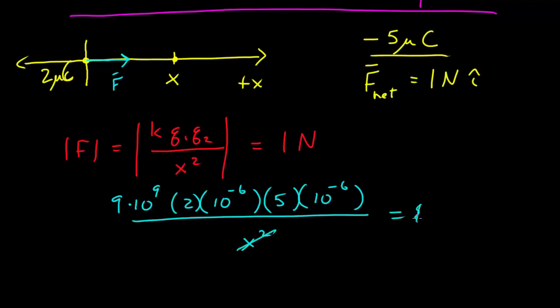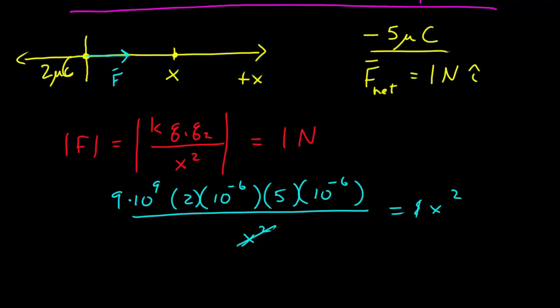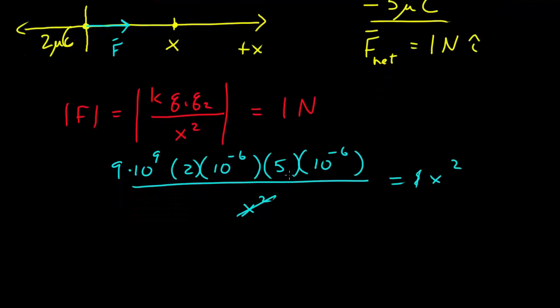I bring x squared to the other side, and I can solve for x. There's 9 times 2 times 5, that's 90, 10 to the 9, 10 to the negative 12, 10 to the minus 3, x squared equals 0.09.